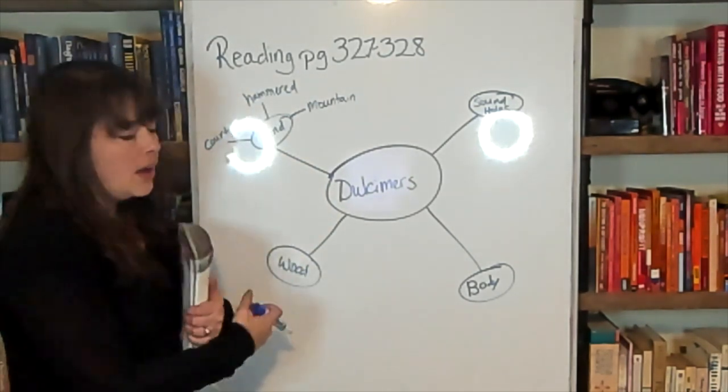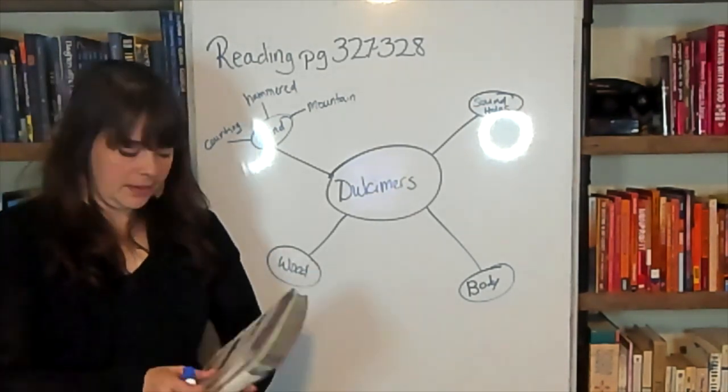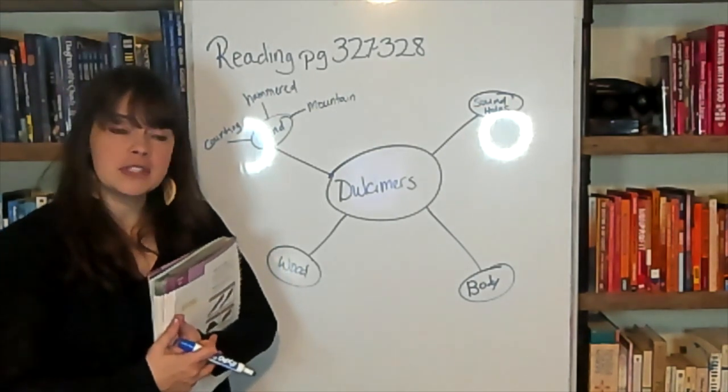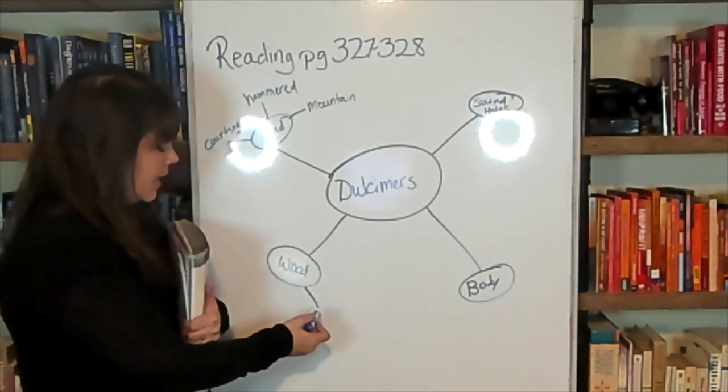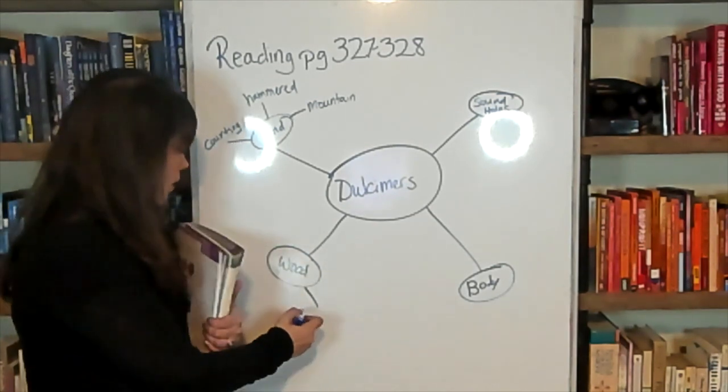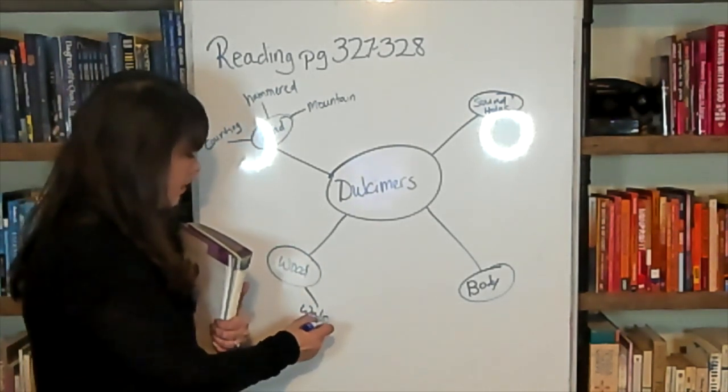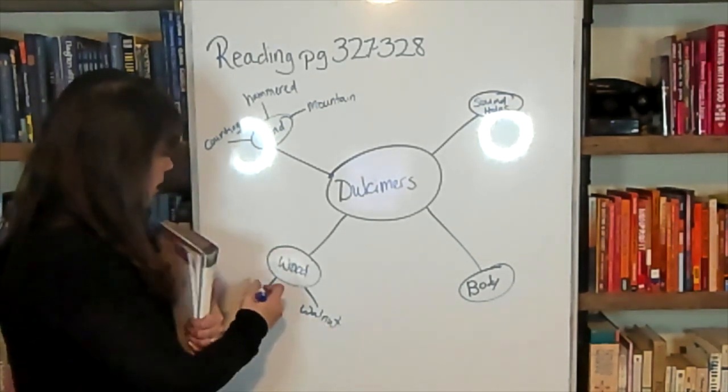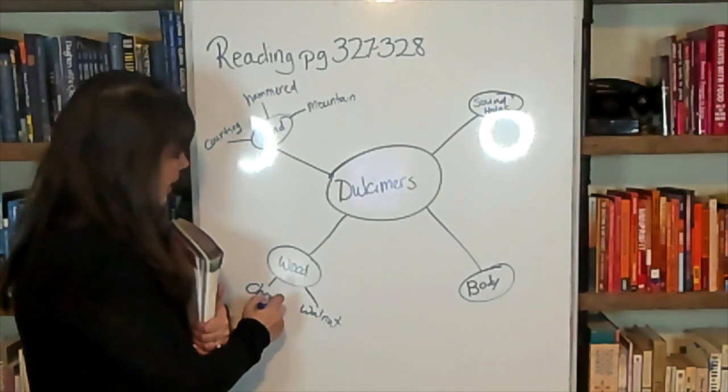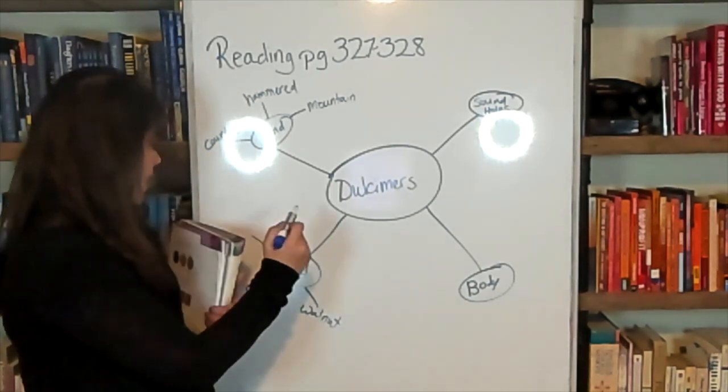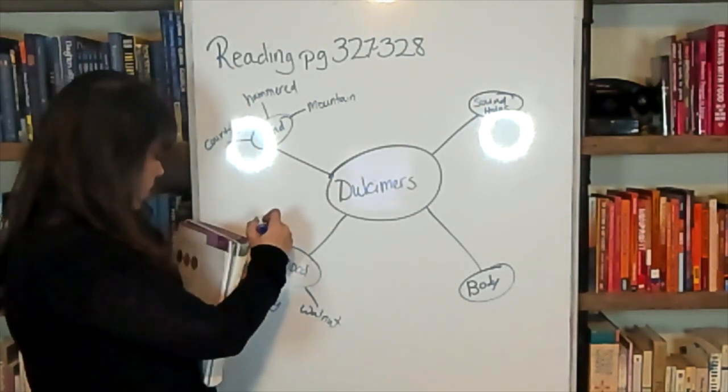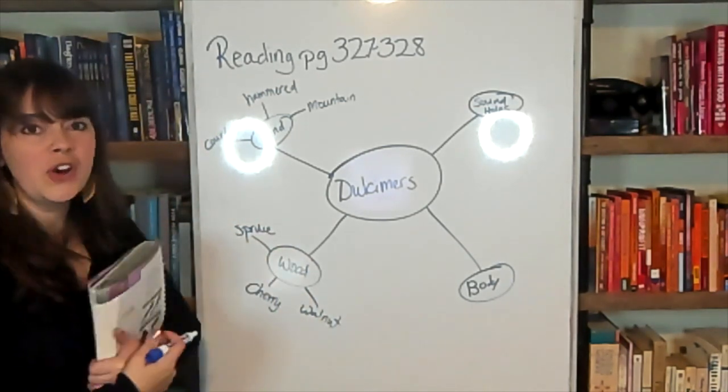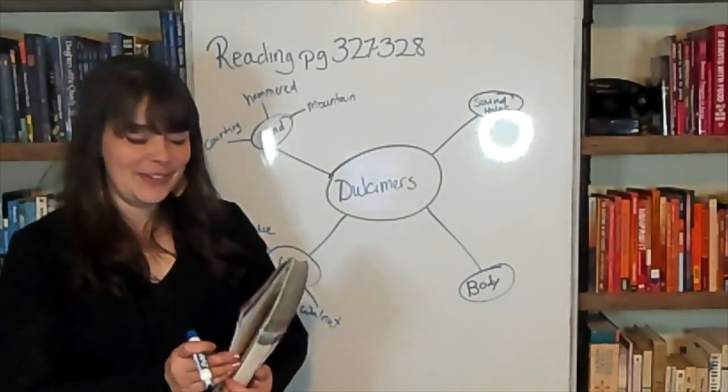Now there's also... Dulcimers were made out of all different types of wood. We look at page 155. We can see it lists some of the different types of wood that dulcimers were played out of. And then we can add this to our word web. Walnut. Or cherry. And if you're being even more detailed, you could add what kind of sound each of these would make. Spruce. These are all names of types of wood that a dulcimer could be made out of.